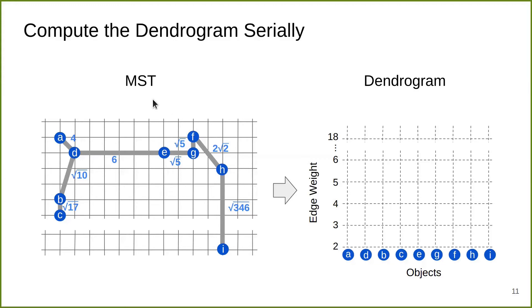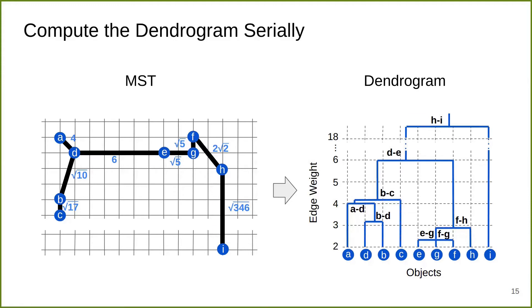To construct a dendrogram from the MST, we first sort all the edges of the MST from smaller weight to larger weight, then process edges one by one. Let's look at the smallest edges of the MST, which are these two edges. We first process them and add them to the dendrogram by connecting the leaf nodes that are associated with these edges and form a small subtree. After that, we process the next edge, which is FH. Similarly, it connects the leaf nodes with the existing subtree. We do similar things for the remaining edges and eventually form the entire dendrogram.